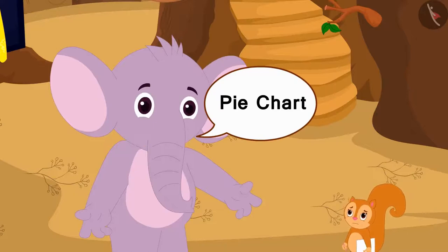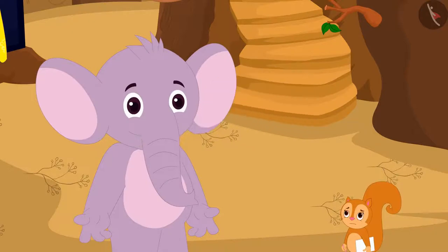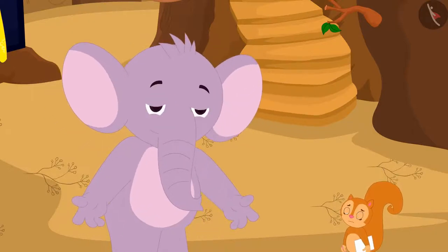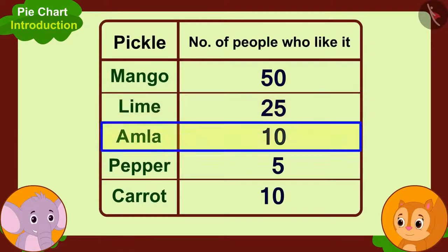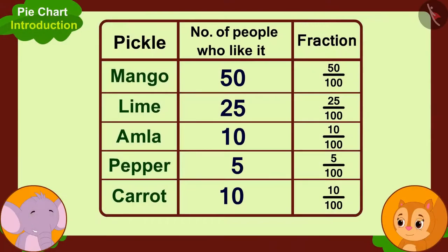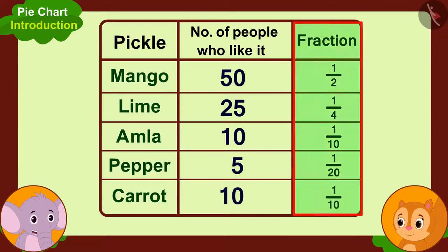Through the pie chart, we can illustrate the information in a simple way by making a circle. Let me teach you how to make it. See, we have got information of a hundred people in total. To make a pie chart, we will first write the number of people who like each pickle as a fraction of hundred. Like, 50 people like mango pickle, so we take that as 50 over 100, or half part of hundred. In the same way, we will write different pickles liked by people as fractions of hundred.